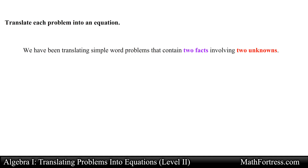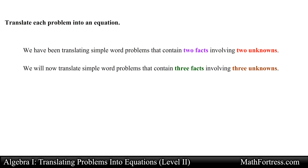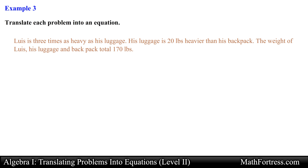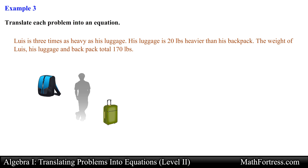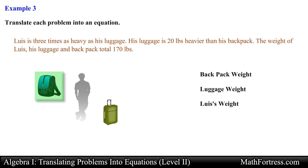Up to this point we have been going over examples that contain two unknowns. Now let's try some examples that contain three facts about three unknowns. Louis is three times as heavy as his luggage. His luggage is 20 pounds heavier than his backpack. The weight of Louis, his luggage, and backpack total 170 pounds. In this example we have three unknowns as opposed to two. Regardless of the number of unknowns the procedure is essentially the same — we first need to identify our unknowns: Louis's weight, the weight of the luggage, and the weight of the backpack. Having identified the unknowns, we now need to choose a variable and represent the rest with it.